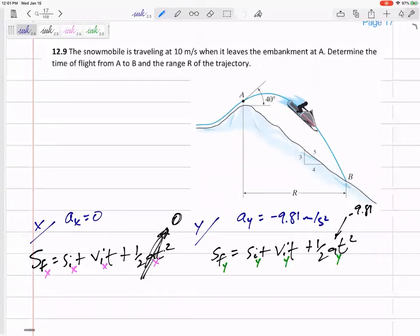For anything that's just flying passively through the air, the only acceleration in this class that we're going to assume is 9.81 meters per second squared straight down.